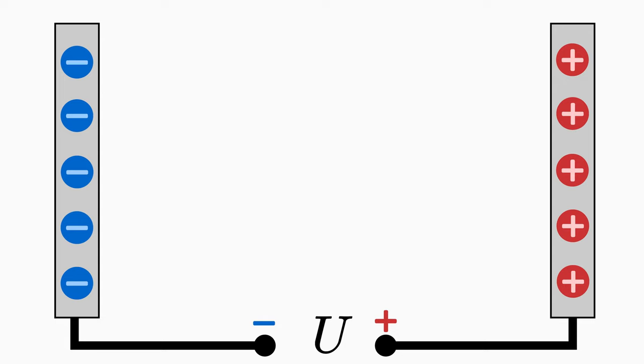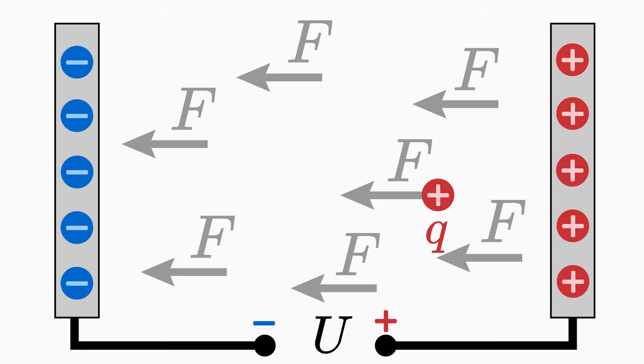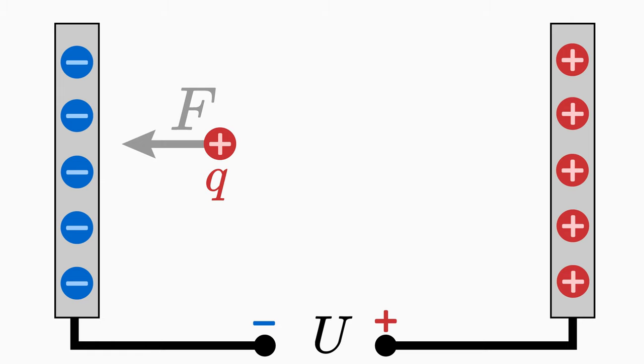No matter where you place the charge inside the plate capacitor, it will always move straight ahead to the other plate everywhere and experience the same force F. A force field, that is the entirety of all force vectors in space, is homogeneous here. Homogeneous means that it doesn't matter where you place the test charge. The test charge experiences the same electric force everywhere in the plate capacitor.